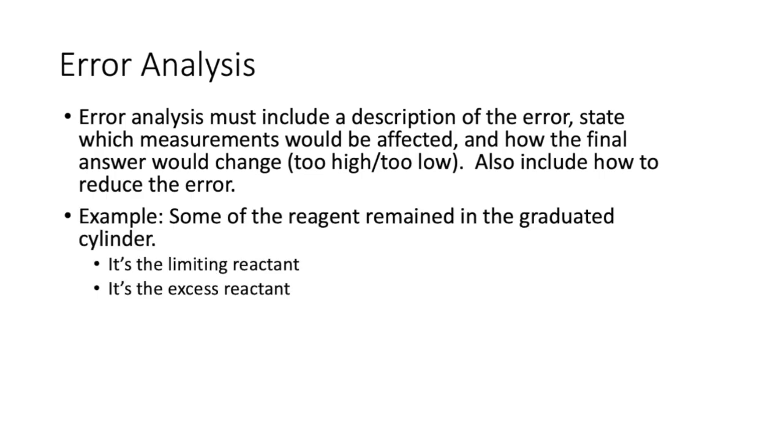One example is you poured the reagent into your DRAM vial, but some of it remained in the graduated cylinder. How would this affect your result? Well, if it's the limiting reactant, then you would have less heat produced from the reaction, because you'd be limiting it more, and then your delta T would be too small, and your delta H would also be too small. But what if it were the excess reactant? If it's the excess reactant, the same amount of heat gets released, but there's actually less solution there to heat up. And so your delta T would be bigger, and your delta H would also be bigger.